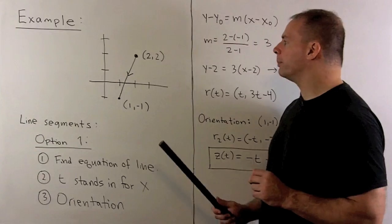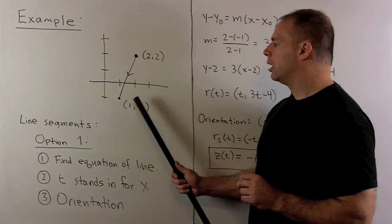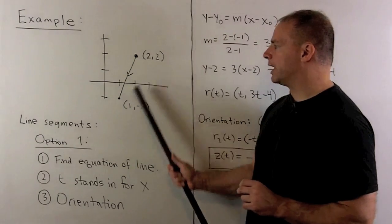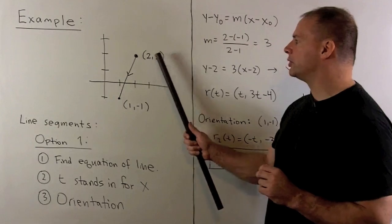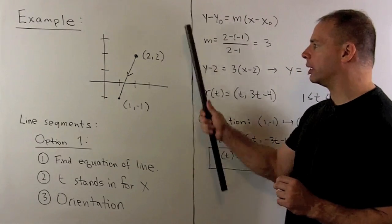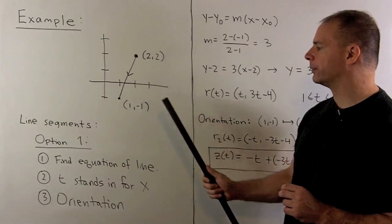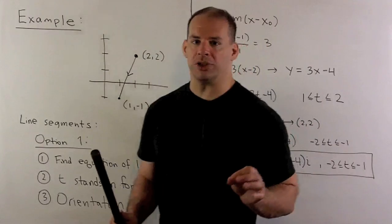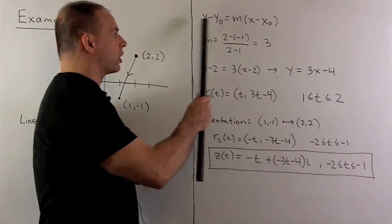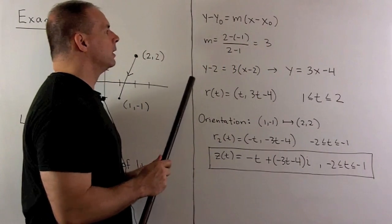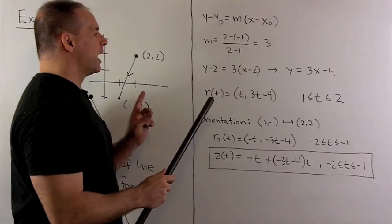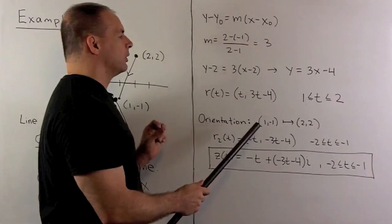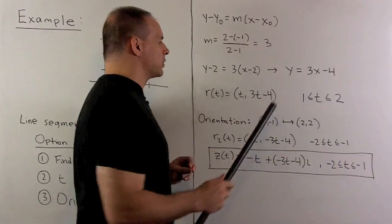So, for the segment I have here, we have point 2, 2, 1 minus 1. We connect the dots, and then we're going to run from 2, 2 to 1 minus 1, so in that direction. If I find the equation of the line, so we have our equation, point slope form, slope is 3. Then, if we put in our point 2, 2, we get the equation y equals 3x minus 4.